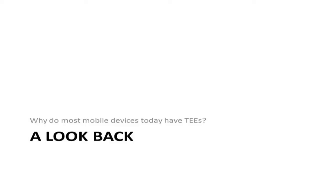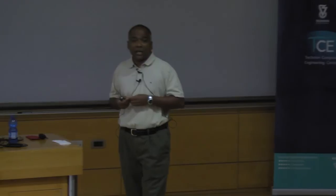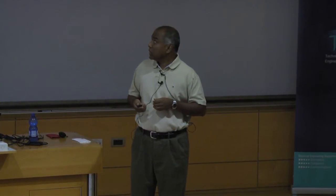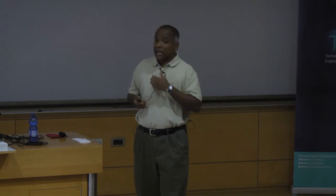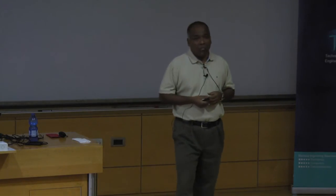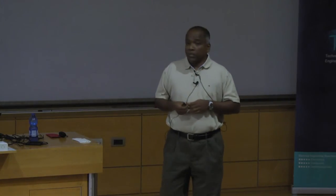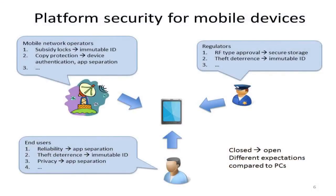Let me start with a look back: why do most mobile devices — pretty much every smartphone and tablet — have this trusted execution environment? To understand that, we have to look at the history of mobile devices. Unlike PCs, mobile devices started out as closed systems about two decades ago — they were essentially embedded devices that did a couple of things: making and receiving calls, sending and receiving messages.